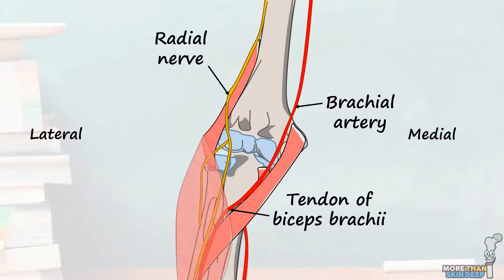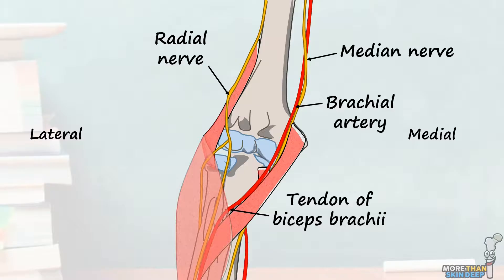Lastly, the most medial structure in the cubital fossa is the median nerve. This runs with the brachial artery down the medial part of the cubital fossa before leaving between the heads of pronator teres. It doesn't produce any significant branches inside the cubital fossa.